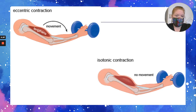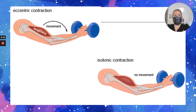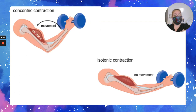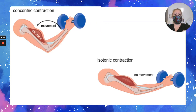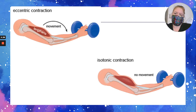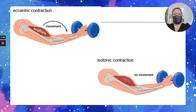You can see here the difference between isometric — no movement, just holding it in position, holding that weight, not moving — and isotonic, where you're either flexing at your elbow or extending at your elbow. When you're flexing at your elbow, you're shortening the biceps brachii. When you're extending your elbow, you are lengthening the biceps brachii. The shortening is concentric contraction, and the lengthening is eccentric.